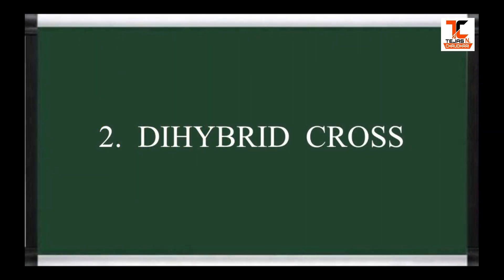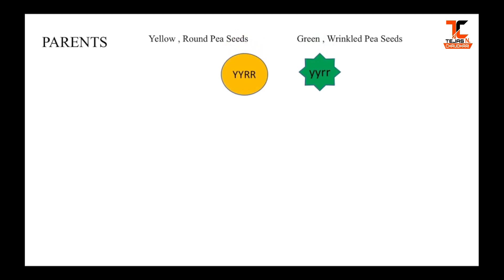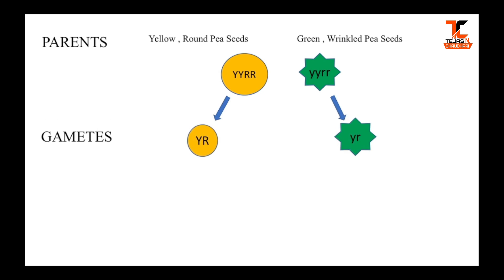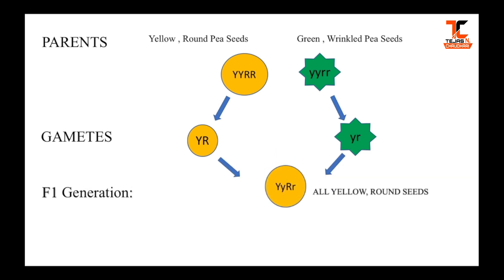The second cross is dihybrid cross, where 'di' means two. Mendel took two varieties from each parent. As we can see in the picture, yellow-colored round-shaped seeds were crossed with green-colored wrinkled-shaped seeds. Here, two variations can be seen — that is, the color of the seed and the shape of the seeds. Hence, this cross is called a dihybrid cross.